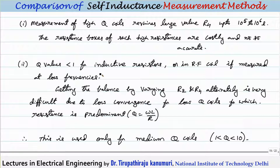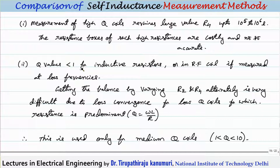For Q values less than 1 — such as radio frequency coils measured at low frequency — getting balance by alternately varying R2 and R4 is practically very difficult and time-consuming. Therefore, this method is generally not used for Q less than 1 either. In summary, this method is used only in the Q range of 1 to 10.